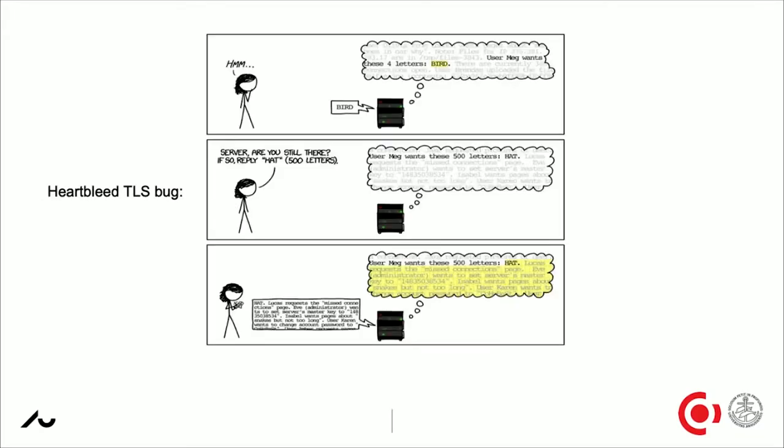So why do we want to do formal verification? Claudio mentioned very briefly what it is — giving a mathematical proof that our software actually satisfies a specification. The internet broke five years ago, and just to remind you about the Heartbleed bug: this was a bug in TLS, the protocol that handles all communication on the internet. TLS is basically the lock in your internet browser.